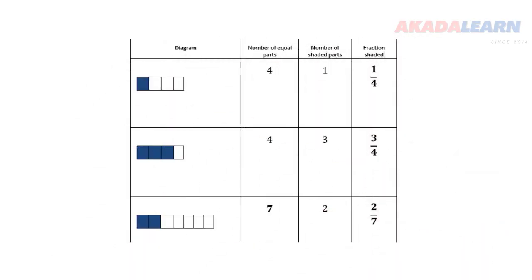Examine this table properly. We are trying to illustrate fractions there. From the first one, one part out of four is shaded. From the second one, three parts out of four is shaded. From the third one, two parts out of seven is shaded.